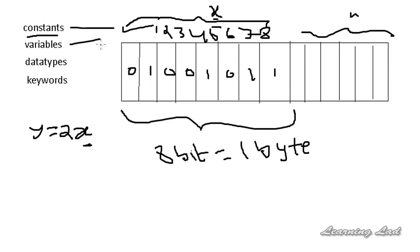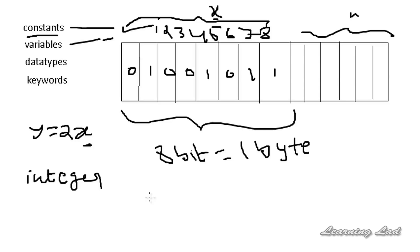Next is about data types. When we store some values in our memory locations and give names to them, the compiler wants to know what type of data we are storing in that variable or memory location. So the type of data stored in a variable is called the data type. We have integer data types which refer to integer constants, character data types which refer to character constants, floating point, boolean, and one special data type called void, which is normally used with functions to indicate that a particular function is not going to return any value.